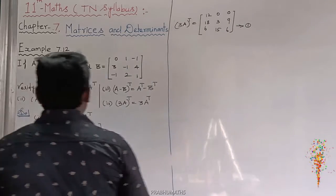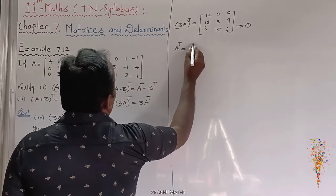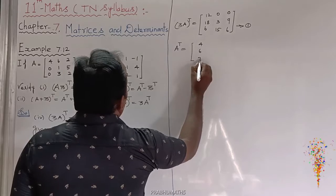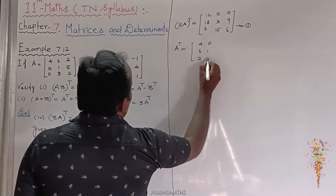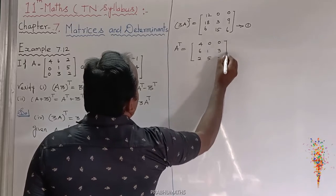Next to find out the A transpose. A transpose is equal to: 4, 6, 2, 0, 1, 5, 0, 3, 2. That is the A transpose value.